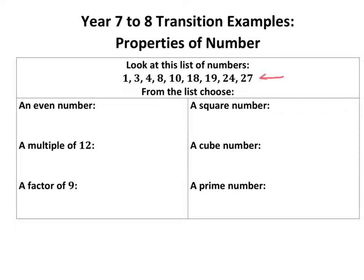From this list, we've got this list of numbers. Pick an even number. I'm just going to go for the first one, four. Multiple of 12. A multiple is a number that's in the 12 times table, so I need a number that's in the 12 times table. That would be 24.